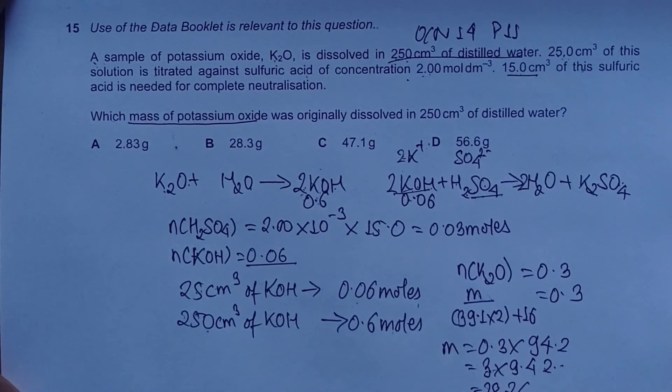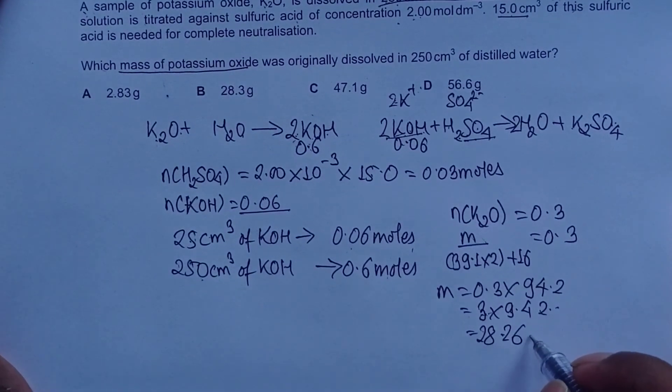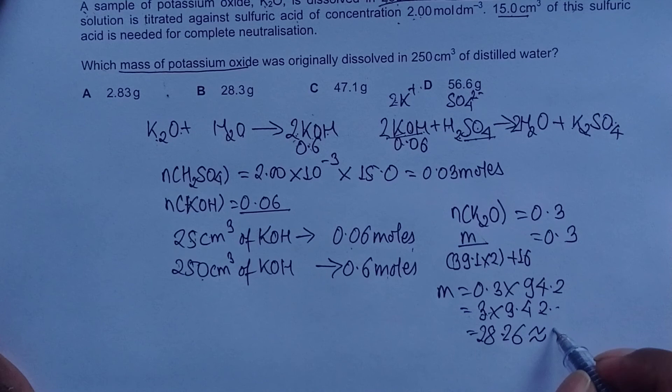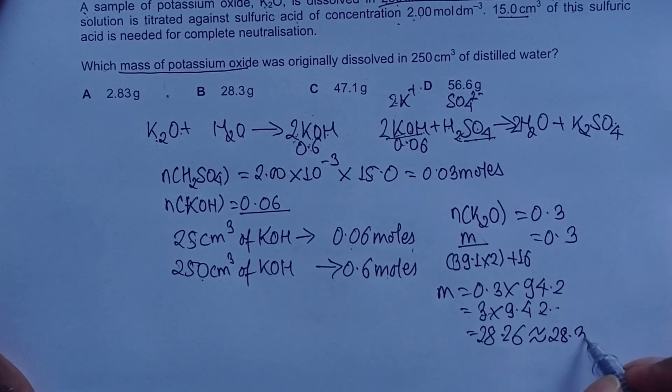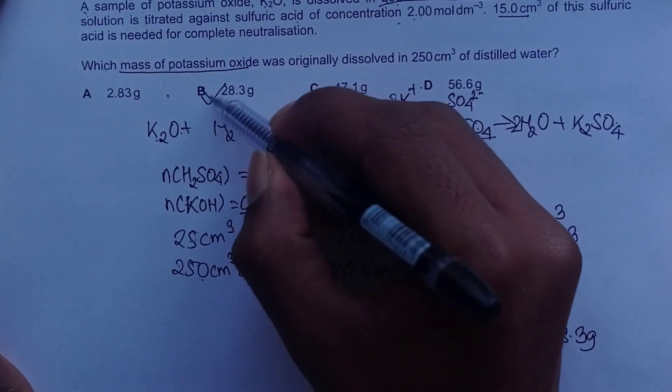This equals 0.3 × 94.2. Three 2s are 6, three 4s are 12, so 28.26. All options are in three significant figures, so this gives us 28.3 grams, which means option B is our correct answer.